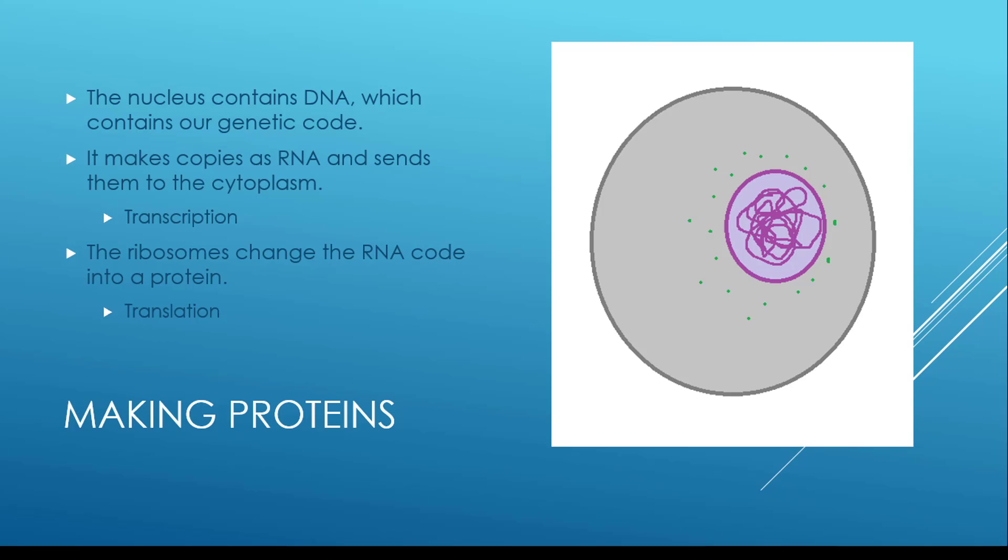Once it's moved out of the nucleus, the RNA then goes to the ribosomes. The ribosomes change that RNA into a protein, and that process is called translation. The green dots here are the ribosomes. The DNA is copied to RNA, the RNA is sent out of the nucleus to the ribosomes, and the ribosomes change it into a protein in a process called translation.